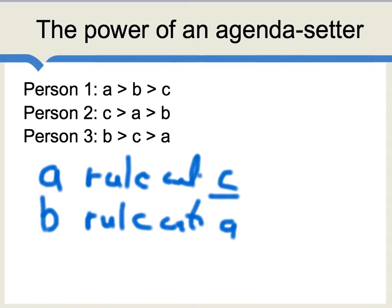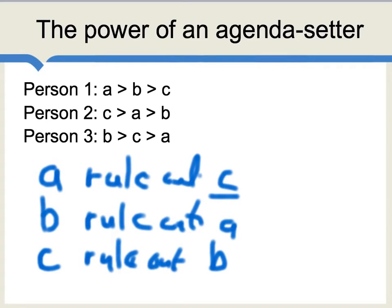Alternatively, if the agenda-setter has option C as a personal favorite, they would rule out option B, and when voting C against A, C beats A 2 to 1. This simple example shows that the person who has the power to decide what gets voted on can actually control everything. Whether your personal favorite would be A, B, or C, if you can rule out one option so it doesn't come up for a vote, you will get exactly your preferred outcome. It may look democratic — you'll see people voting, the majority-favored option will win — but when you peer more deeply behind the surface, the agenda-setter can have an extreme degree of power.